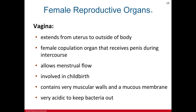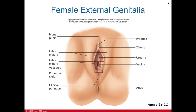The vagina extends from the uterus to the outside of the body. It is the female copulation organ that receives the penis during intercourse, allows menstrual flow, and is involved in childbirth. It contains muscular walls and a mucous membrane with a very acidic environment to keep bacteria out. The vagina is a self-cleaning organ; douching or cleaning the vagina with water can actually introduce more bacteria and cause urinary tract infections.